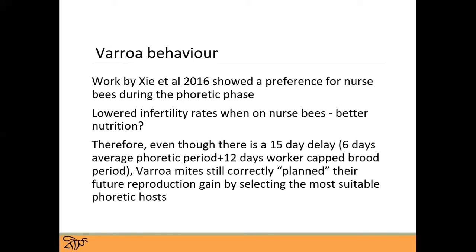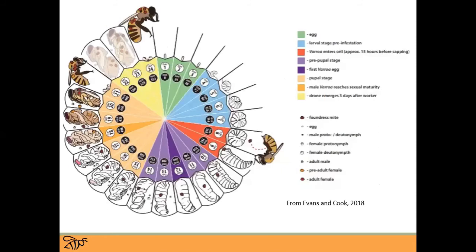Varroa mites actually do have their own behavior and are able to, quote unquote, plan their future reproduction by ensuring that they jump onto those nurse bees. They're getting great nutrition from the fat bodies on those nurse bees, and they also increase their chance of successfully finding an opportunity to jump back into that perfectly timed cell right before it's capped to start that reproductive cycle all over again. It really opens your eyes that varroa mites aren't just blindly living in a colony. They do have a very successful way of increasing their reproduction. Keeping in the back of your mind as a beekeeper: how much drone brood do you want in those colonies, and really think about the impact it can have on the magnitude of the varroa population.